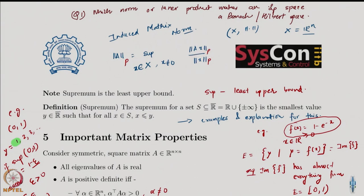Obviously, x has to be compatible with A. If it is a 1×2 matrix, I cannot take a 3-dimensional vector — x has to be something that you can actually make this multiplication happen. But remember that the size of the vector in the numerator and the size of the vector in the denominator do not have to be the same. You can compute the P norm for any vector space.